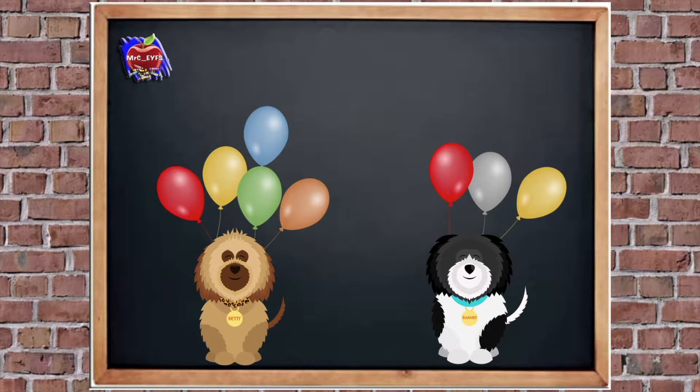How many balloons do they have all together? So we need to count Betty's and Barney's balloons. So shall we start counting from one? No, what did we do last week? Yeah, we were counting on from five, weren't we? So we know Betty's got five balloons. So let's count on from five. Are you ready? So we'll say five, six, seven, eight. Good job. Well done.